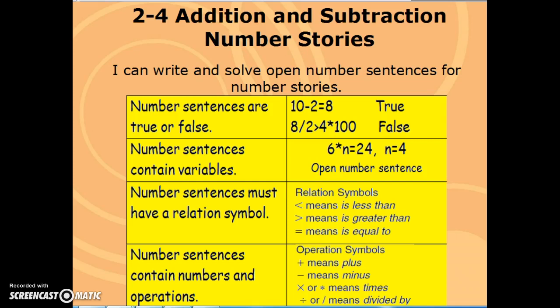All open number sentences are either true or false. You can sometimes have a false number sentence. You might be asked to find ones that are true or false. So they give you some examples. We know that 8-2 equals 8. That's true. However, 8 divided by 2, that would be 4, is not greater than 4 times 100.